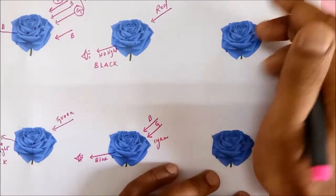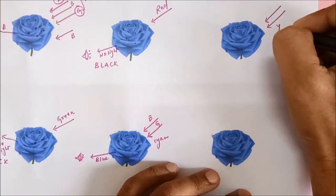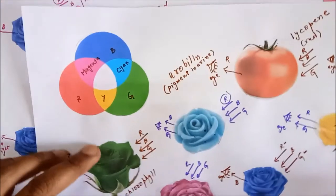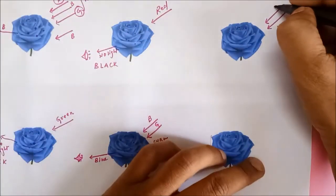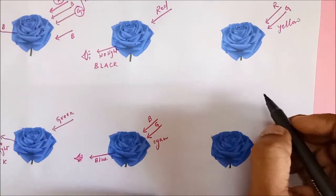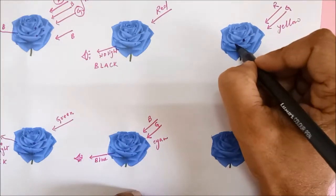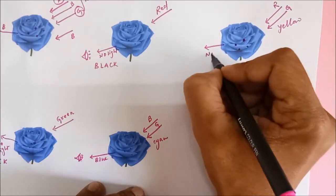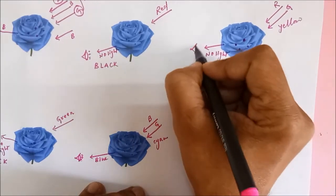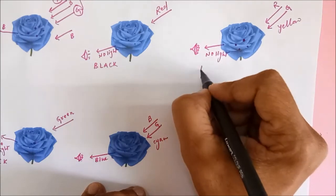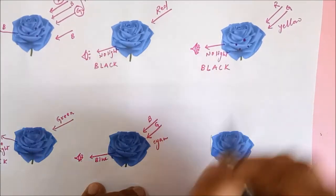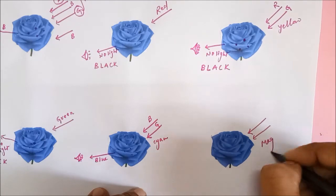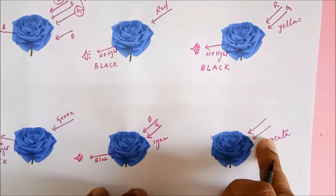Now let us talk about yellow light. Yellow light is made up of red and green. We know that the pigments absorb both red and green colors, so no color reaches your eye and you perceive the rose as black.